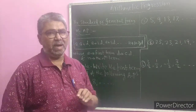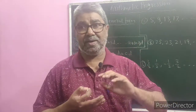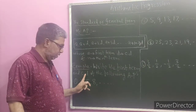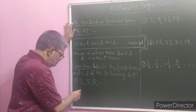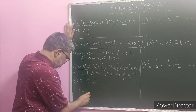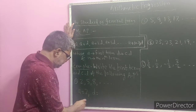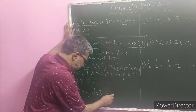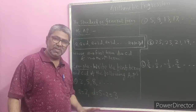Now let us solve a few examples and see how we can find and write the first term and common difference. The task is: write the first term A and common difference D of the following arithmetic progressions. Example 1: 2, 5, 8, and so on. Looking at this arithmetic progression, A, the first term, is 2. And common difference D is nothing but 5 minus 2, the next term minus the preceding term, which gives 3. So in this arithmetic progression, the first term is 2 and the common difference is 3.